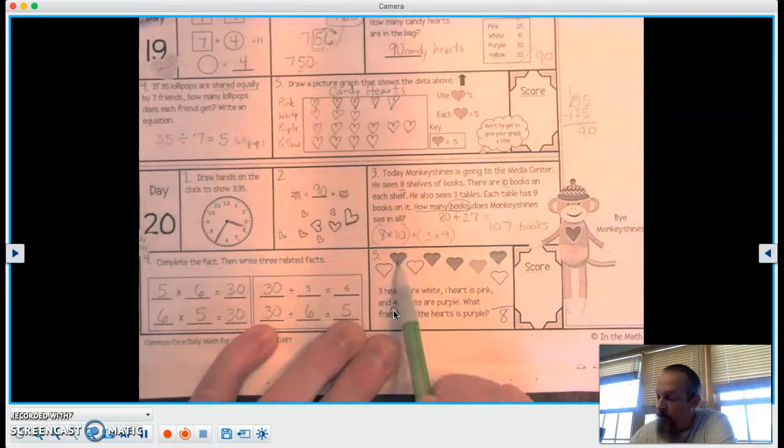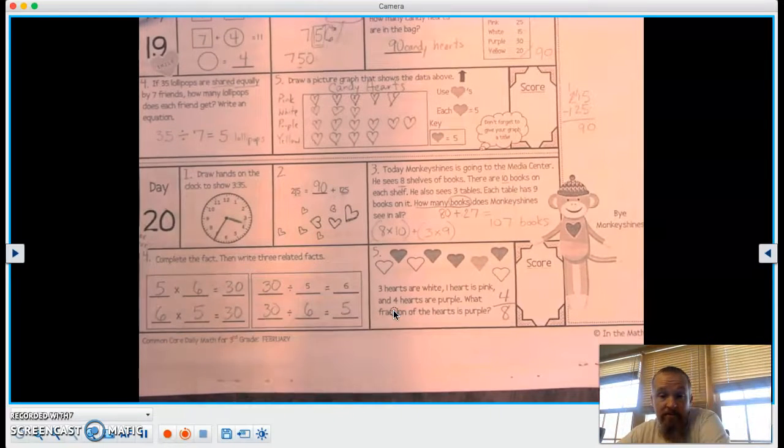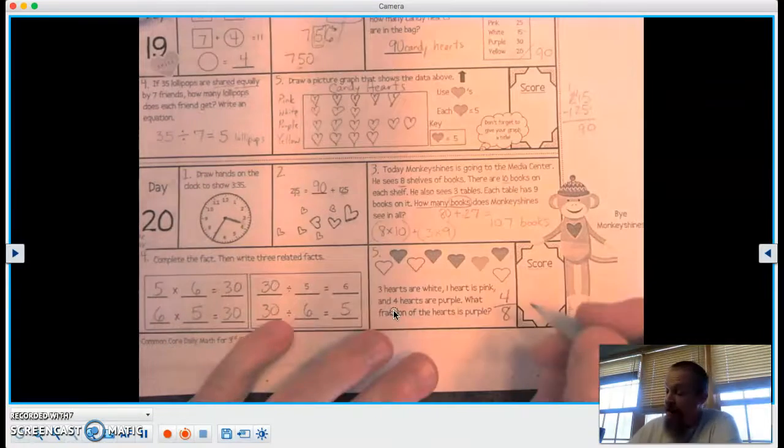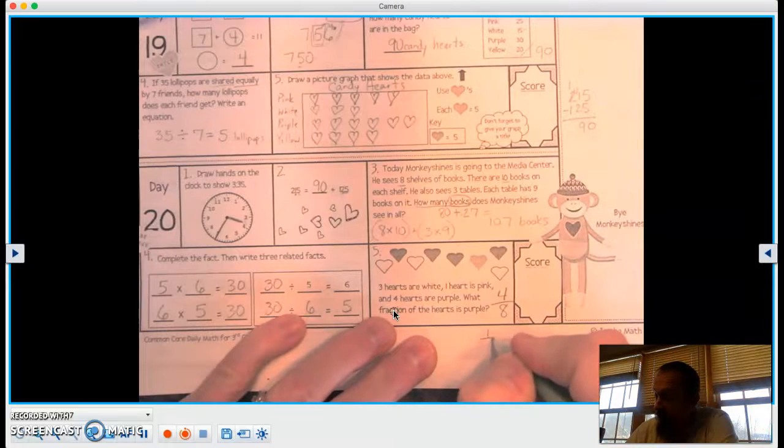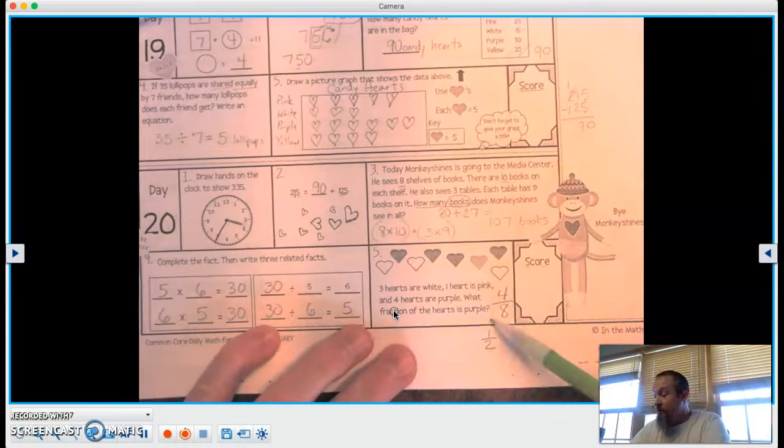Well, there are 4 hearts. So 1, 2, 3, 4. 4 out of 8 are purple. We can also think of that as 1 half. I'll accept either one at this point.